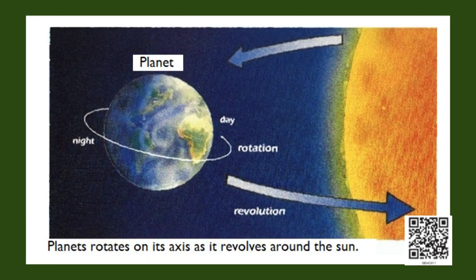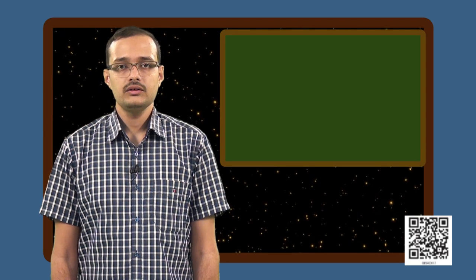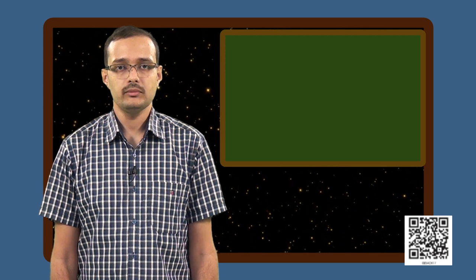Planets also rotate about their own axis and this rotation causes the days and nights on those planets. Different planets rotate with different speeds and hence the days and nights are of different lengths on different planets. We will now look at these planets one by one.